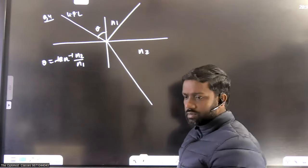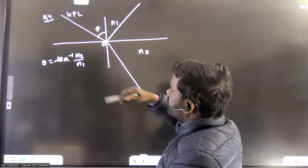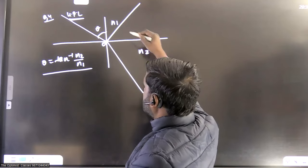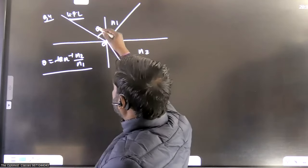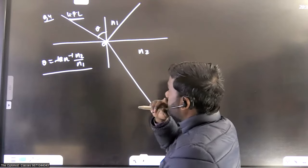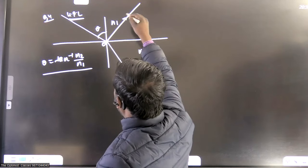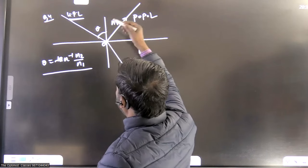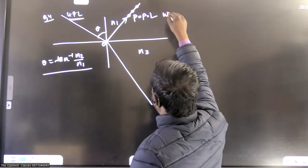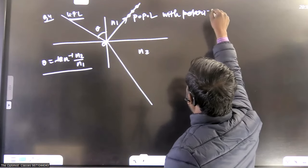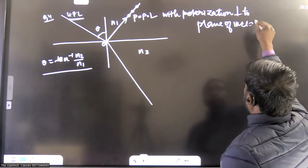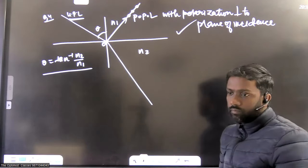This question was about unpolarized light incident at an angle on the interface of two media with refractive indices n1 and n2. One correct option is that the reflected light is plane polarized, specifically with the electric field polarized perpendicular to the plane of incidence. Only one option is correct in this question.